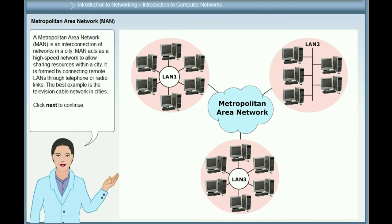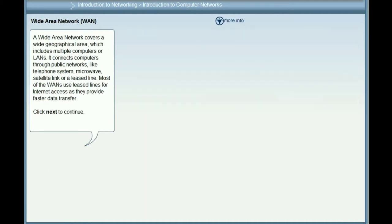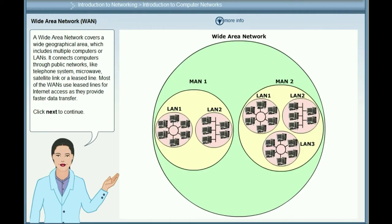The best example of MAN is the Television Cable Network in cities. A Wide Area Network covers a wide geographical area, which includes multiple computers or LANs. It connects computers through public networks like telephone system, microwave, satellite link or a leased line. Most WANs use leased lines for internet access as they provide faster data transfer.